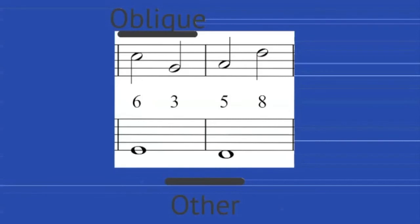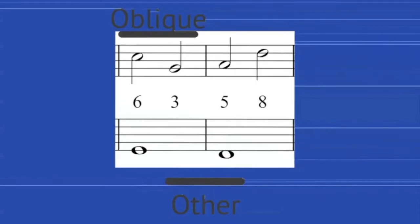Between the bars, however, you'll note that we have another type of contrapuntal motion. It could be contrary, it could be parallel, it could be similar, but it will not be oblique between the bars, only within the bars. And that's actually really important because it will affect our choices, our melodic choices, as we compose our counterpoint.